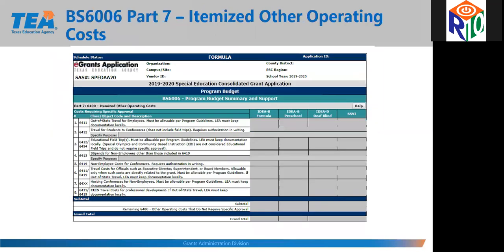Part 7, 6400 itemized other operating costs, had no changes. If a budgeted item requires prior approval, additional documentation must be created and kept locally, or if applicable, submitted to TEA via Grantsupports at tea.texas.gov — and not attached to the e-grant application — prior to any approval of those activities.